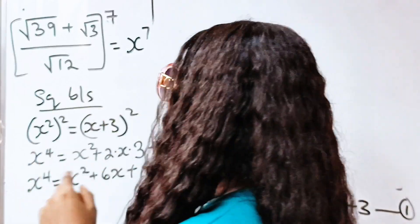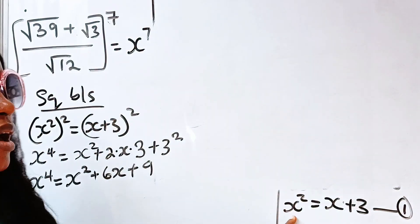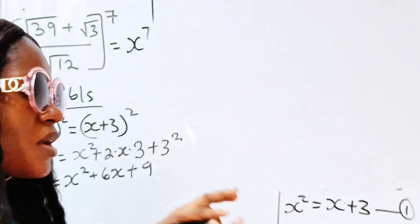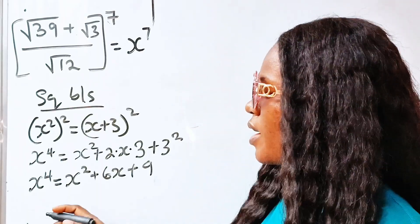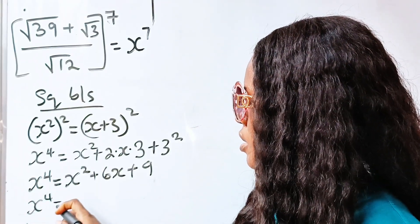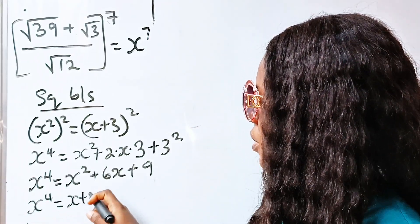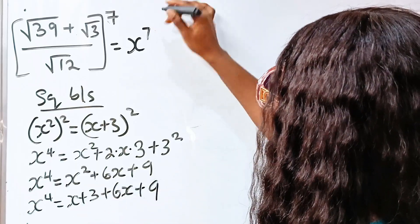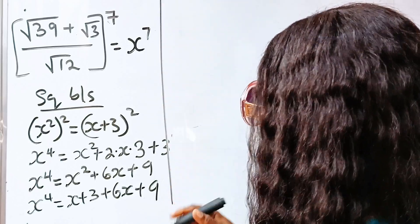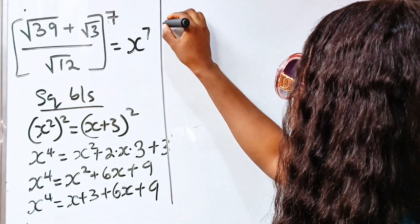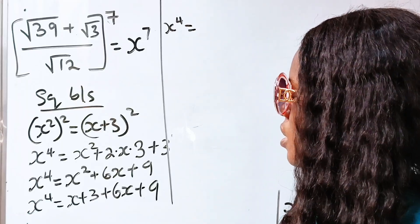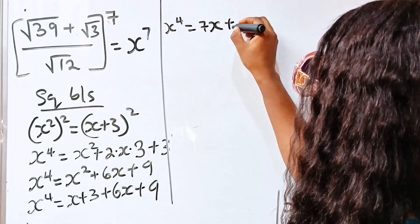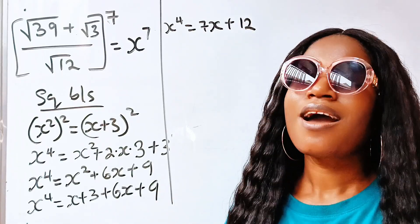Now the logic is: anywhere you see x squared, replace it with x plus 3. So x to the power of 4 equals x plus 3, in place of x squared, plus 6x plus 9. Solving this: x to the power of 4 equals x plus 6x, which is 7x, plus 3 plus 9, which is 12. So x to the power of 4 equals 7x plus 12.